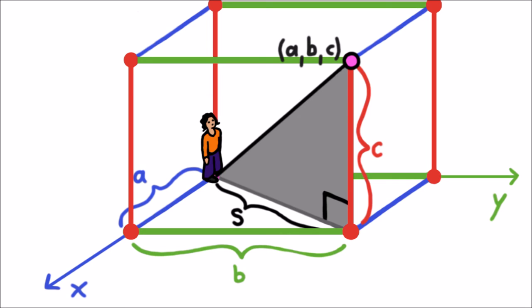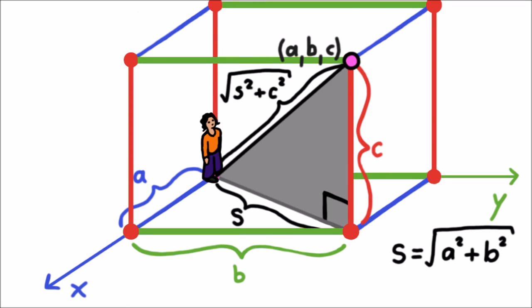So this tells us that the length of our rope is the square root of S squared plus C squared. Well, we know that S is the square root of A squared plus B squared. So when we substitute that in, we get that the length is the square root of A squared plus B squared plus C squared. This is the Pythagorean theorem in dimension three, and it allows us to calculate the distance between any two points in this universe.